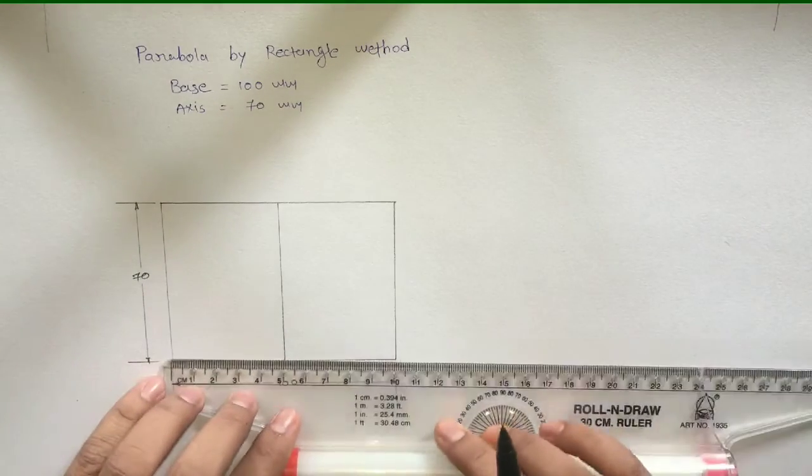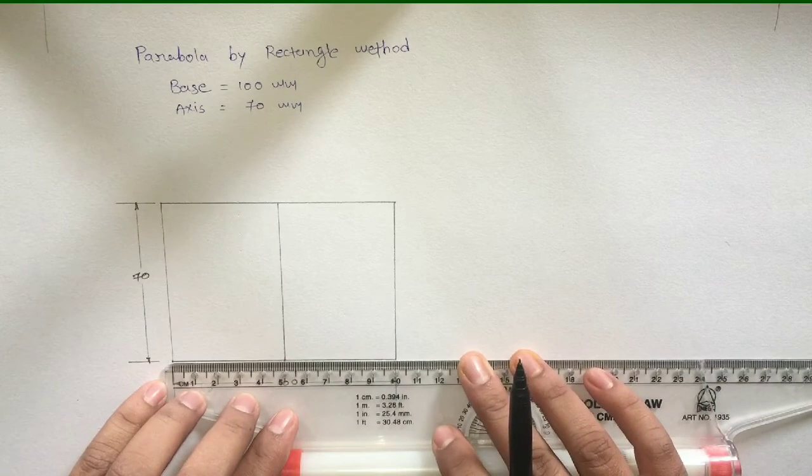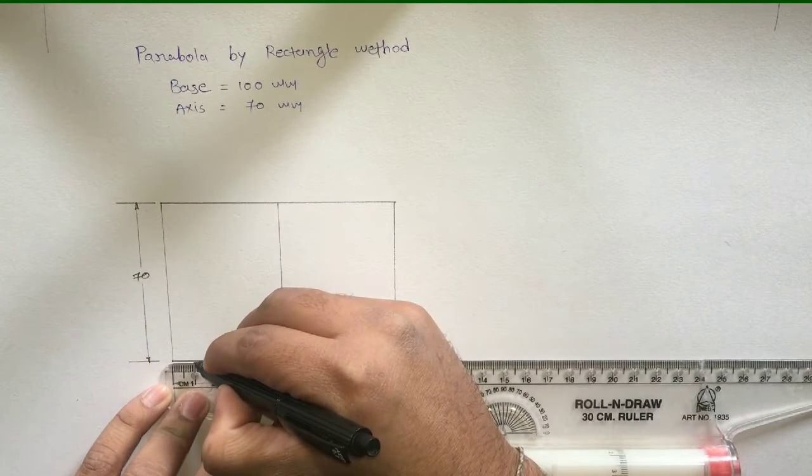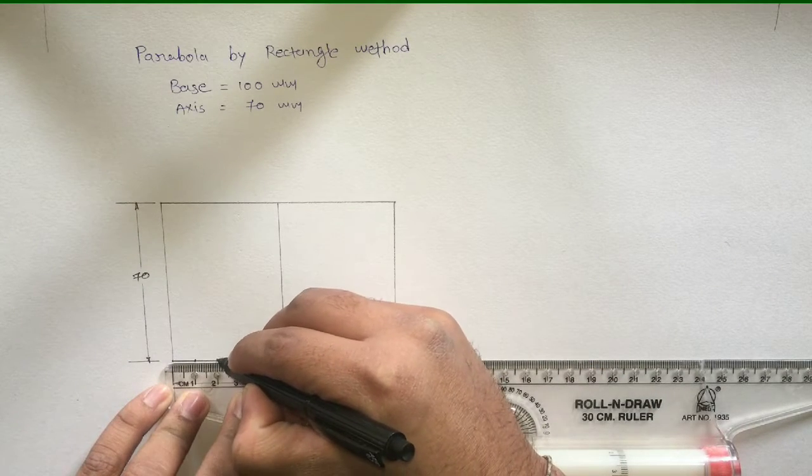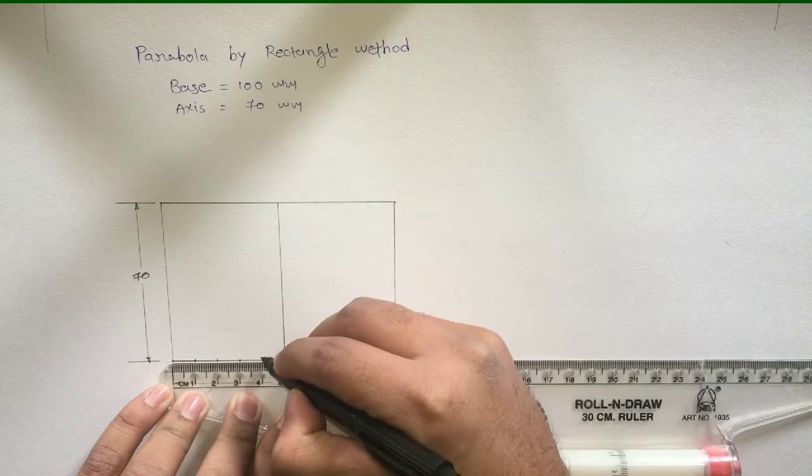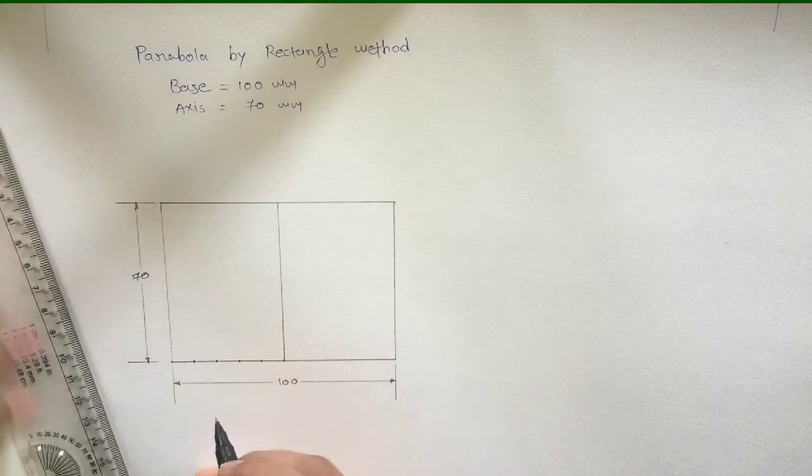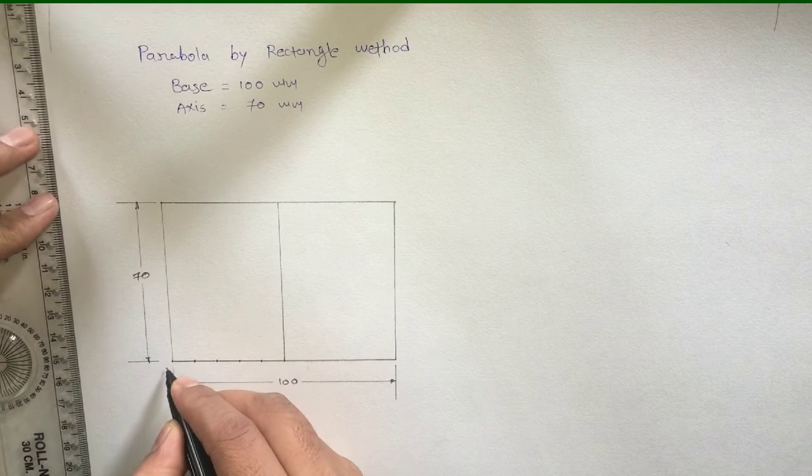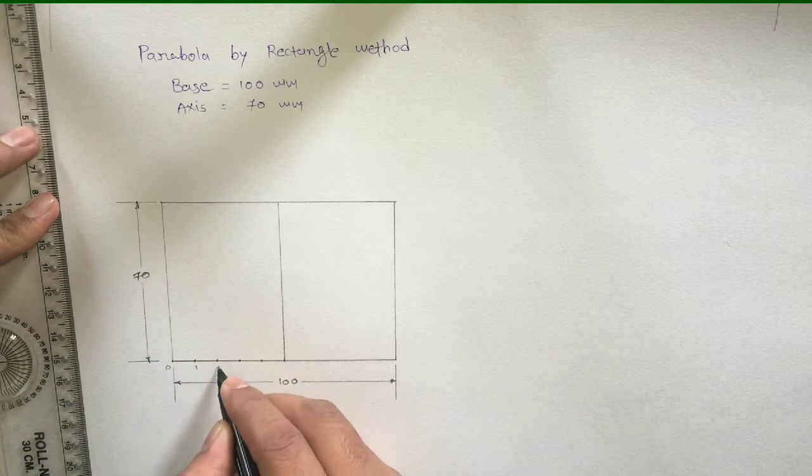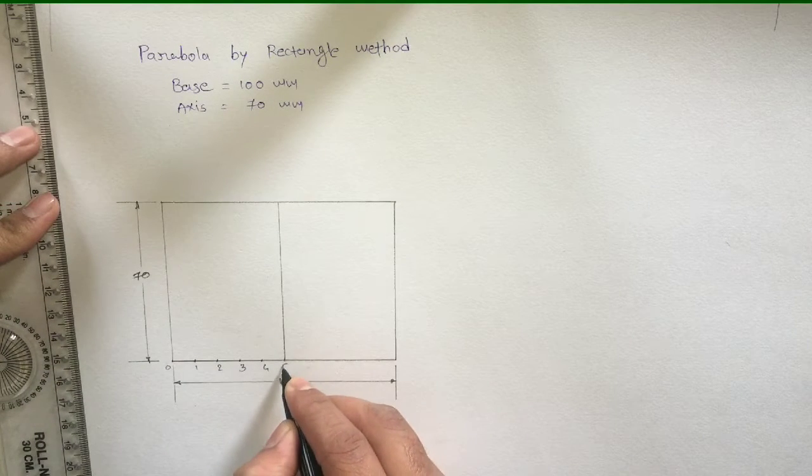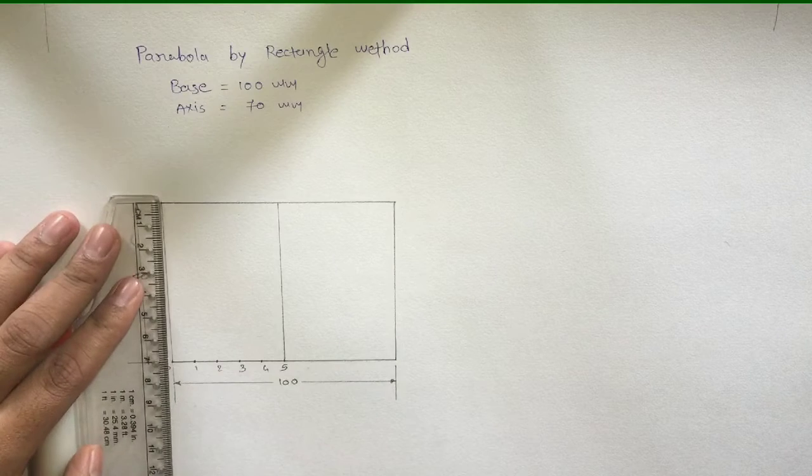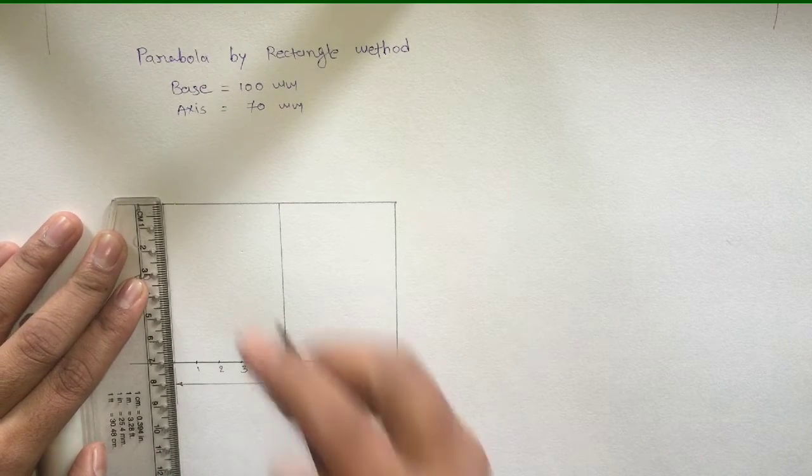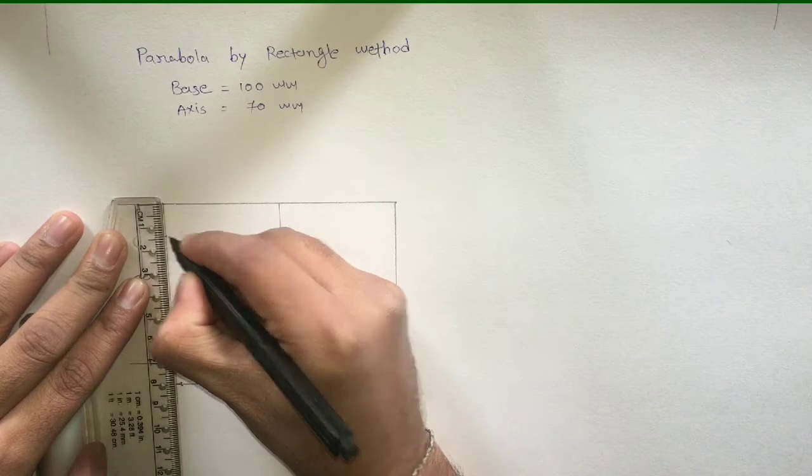You can divide these lines into five equal parts. Remember there is no thumb rule of dividing this into five equal parts only - you can go for four or six or whatever you want. 70 divided by five is 14 mm for each part.